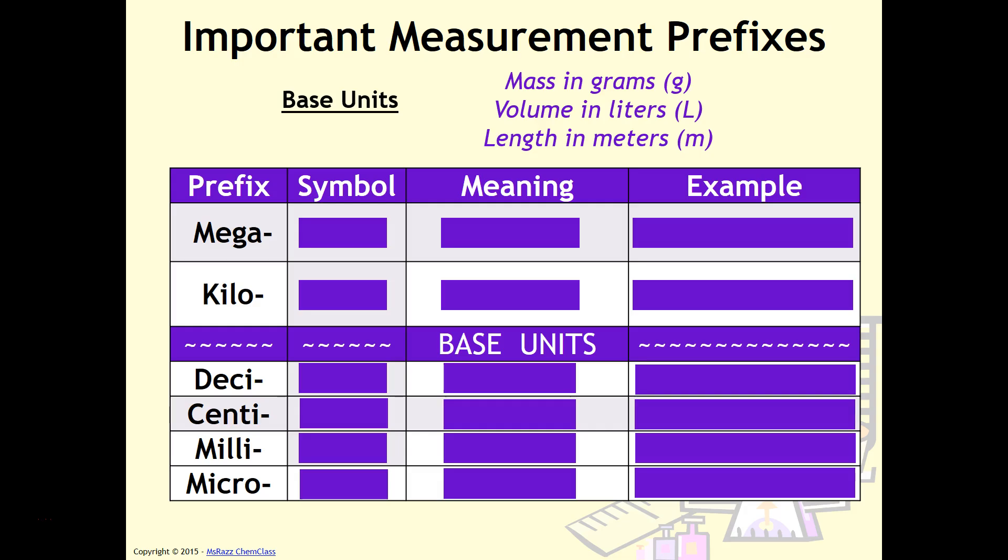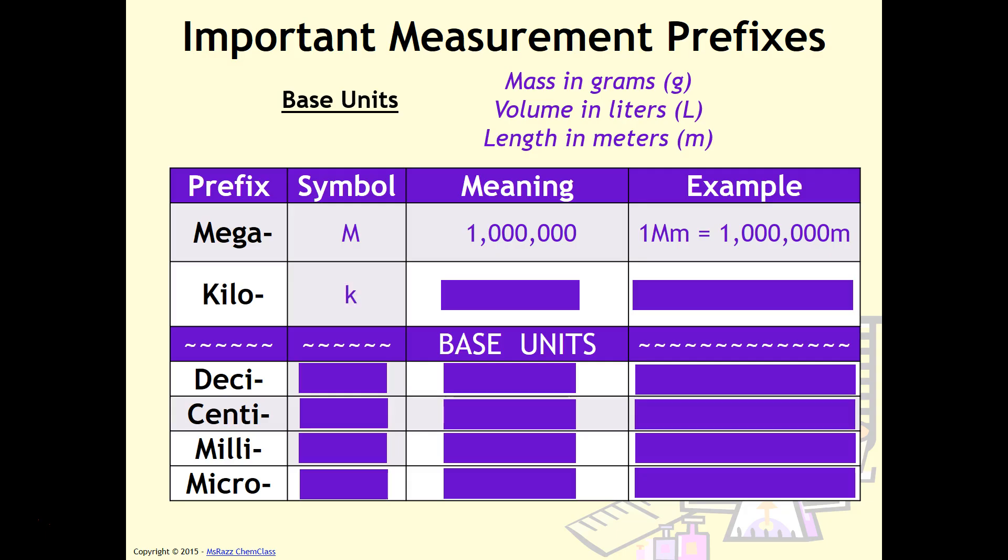For the mega prefix, mega is a large prefix. It has the symbol capital M. It means one million. An example would be one megameter equals a million meters. Kilo has the symbol lowercase k. It means 1,000. One kiloliter equals a thousand liters. If you notice, these prefixes can be used to modify any of the base units. Either way, you're still going to be using the base unit and modifying it using the prefix.